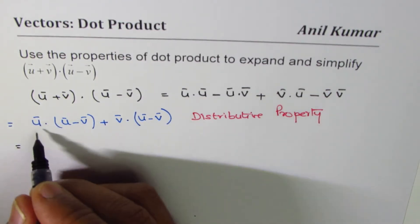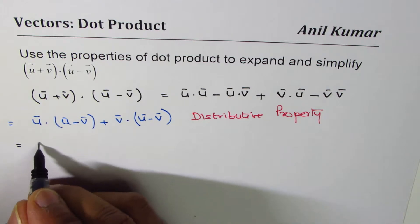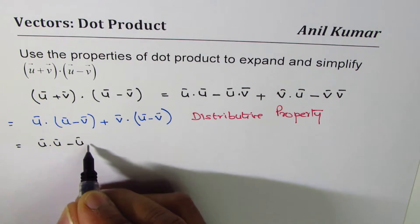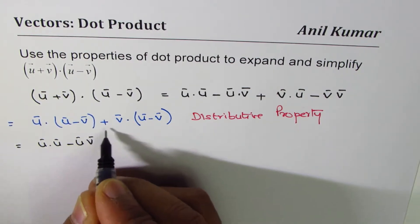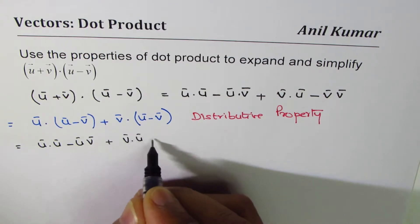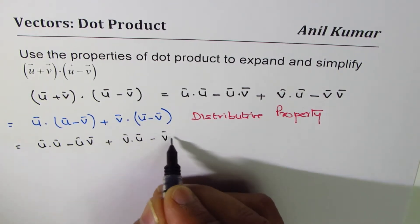Now we'll repeat this property, so we get u dot u minus u dot v, and here we get v dot u minus v dot v.